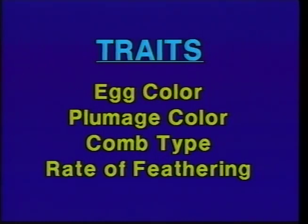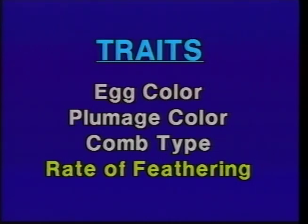To review the traits covered today: egg color — blue is dominant to white; plumage color — an example of incomplete dominance controlled by a single locus, with black, white, and blue animals; comb type — controlled by genes at two loci, with four types: walnut, pea, rose, and single combs; and two sex-linked traits — rate of feathering and barring, with rate of feathering demonstrated for sexing chicks at day of hatch. Thank you to Dr. Brandt and to High Line Poultry in Dallas Center for providing the birds.